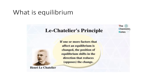Alright, so Le Chatelier — where all this comes from — essentially he said there's an effect. You have a system, you have snowballs going left and right, and if somehow you affect this perfect equilibrium, the shift is going to make up for the change. So if there is a change, there's going to be a shift that's going to make up for that change.